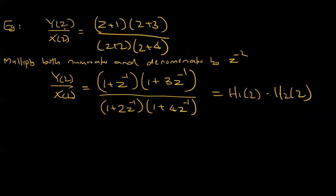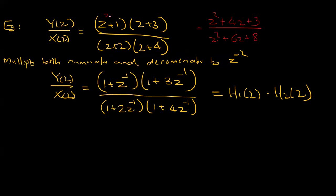Now for an example: H of z equals z plus 1 times z plus 3, divided by z plus 2 times z plus 4. We can rewrite z plus 3 divided by z-squared plus z plus 8 as the transfer function. To solve this, we work with numerator and denominator — z minus 2 multiplied by z minus 1. Converting to z-inverse form gives us the required factors.